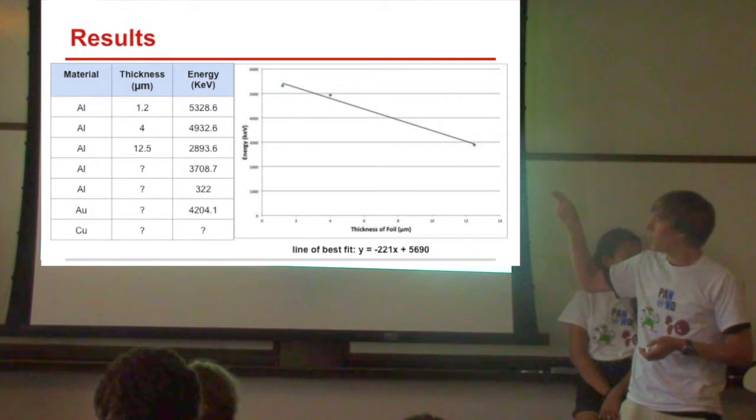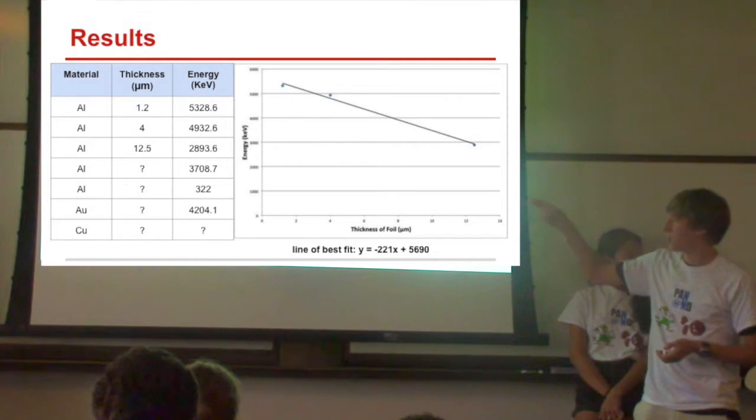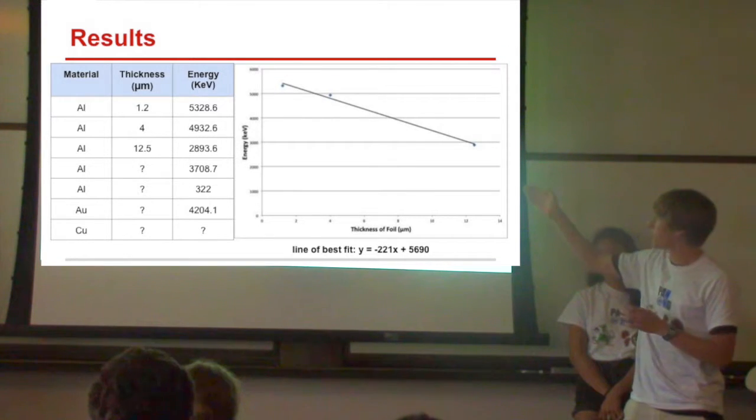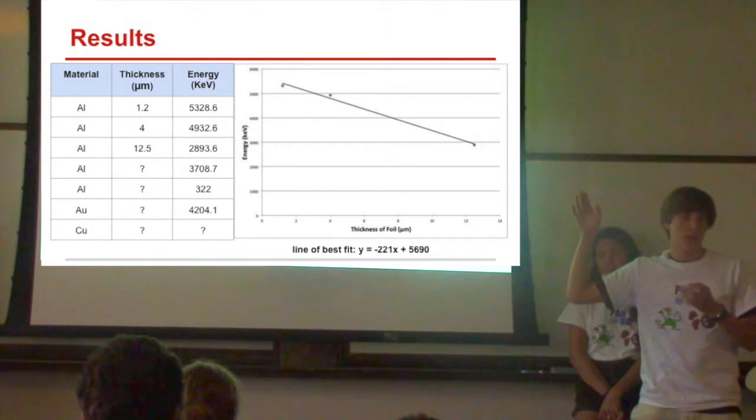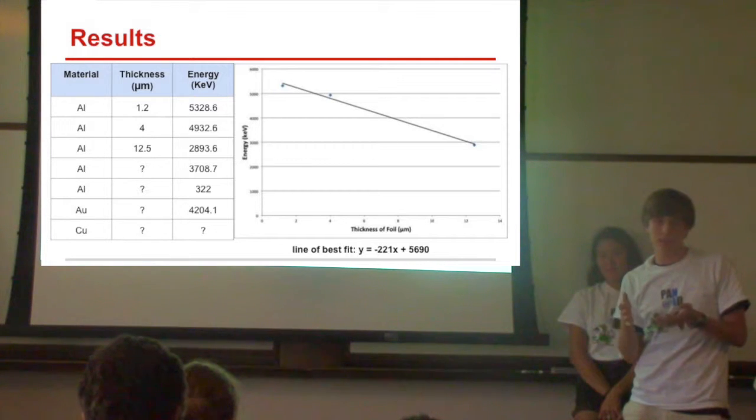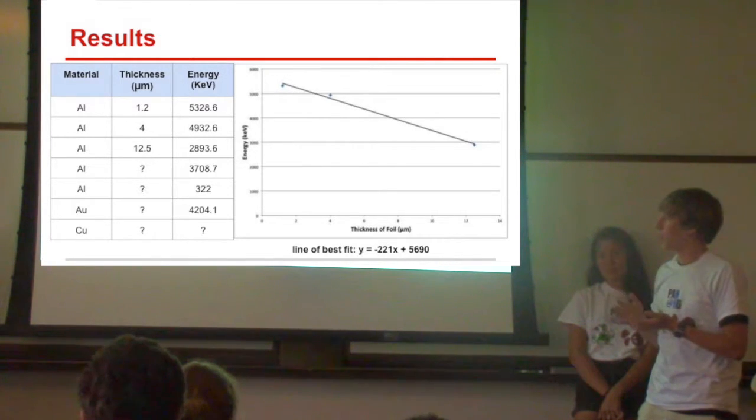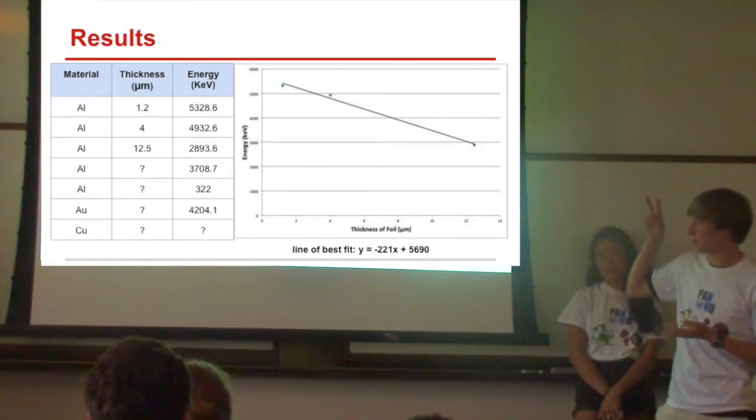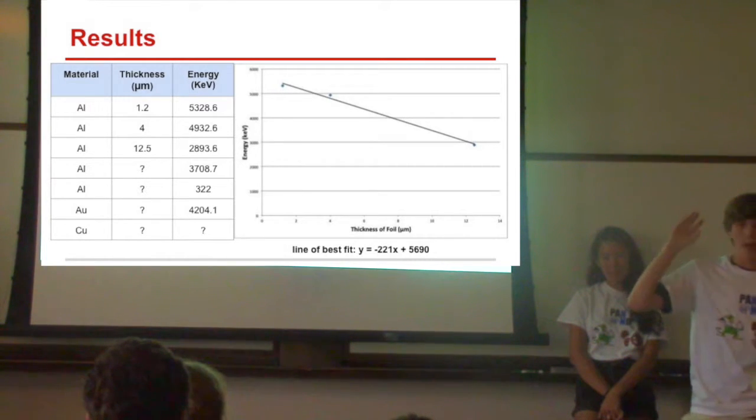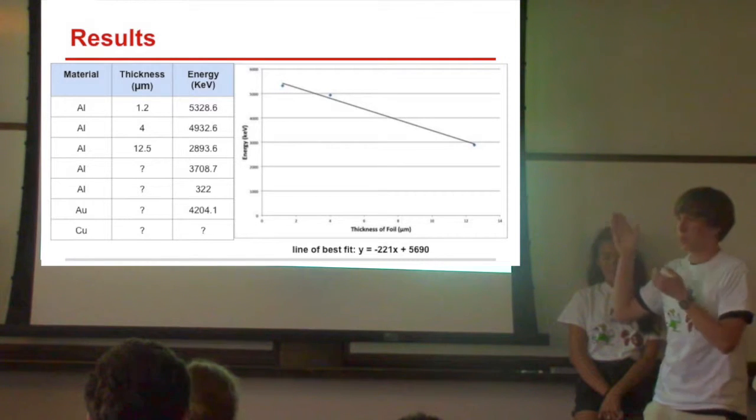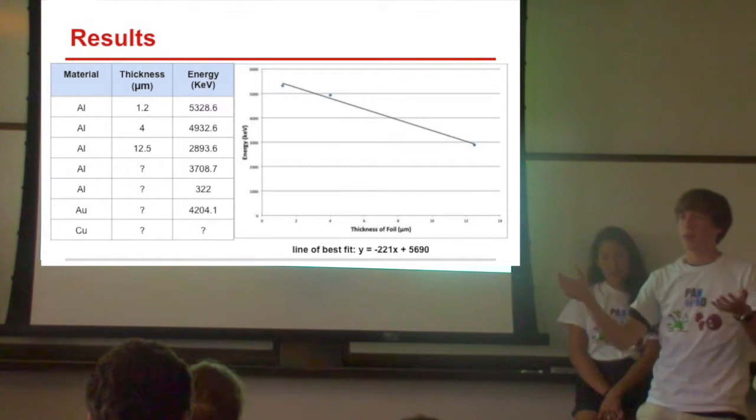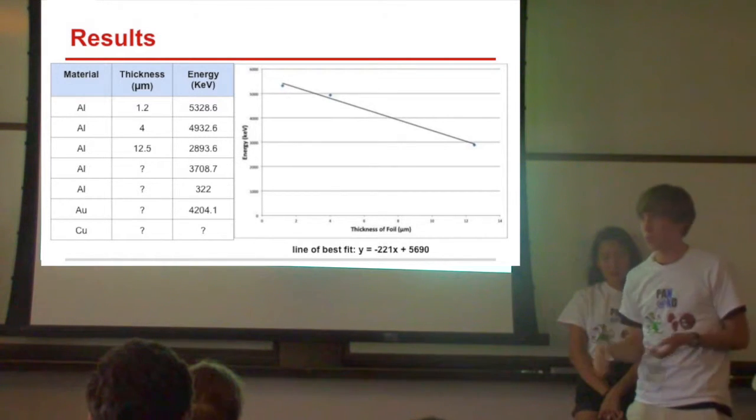Then with the two unknown aluminum foils we used, as well as a gold and a copper foil, we were able to put them on this graph and get a rough estimate of how thick these foils might actually be. For the gold, the aluminum, and both aluminum unknowns, we ended up getting energy through, so we were able to put them on this graph. The copper one we determined was probably too thick because none of the alpha particles were making it through.